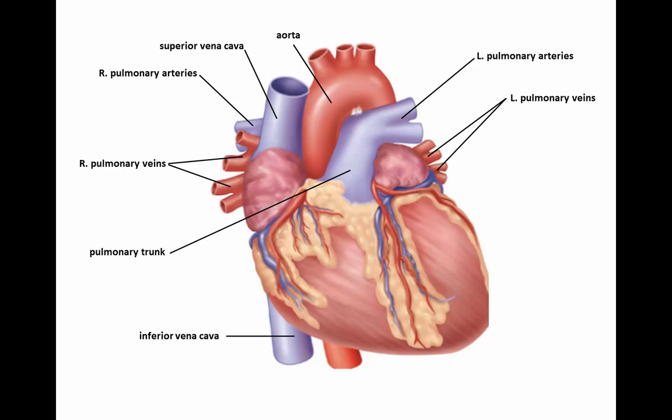The aorta is red in color and the pulmonary trunk is blue in color. This denotes that the aorta transports oxygenated blood and the pulmonary trunk transports deoxygenated blood. Branching off the pulmonary trunk are the right and left pulmonary arteries. The other blood vessels identified in this diagram are the right and left pulmonary veins, which transport oxygenated blood back to the heart from the lungs.